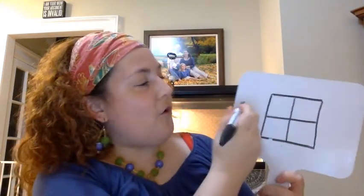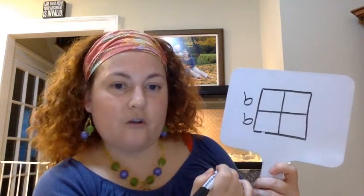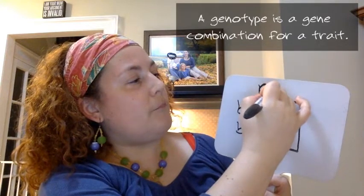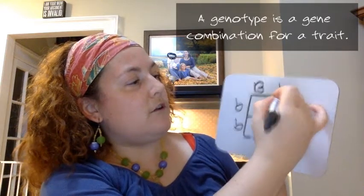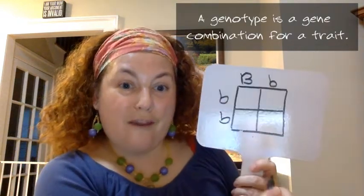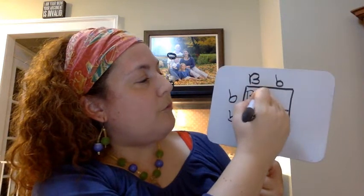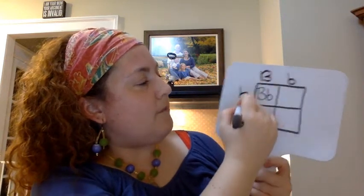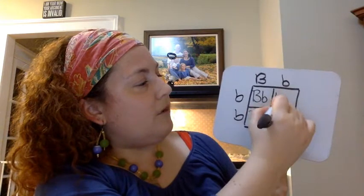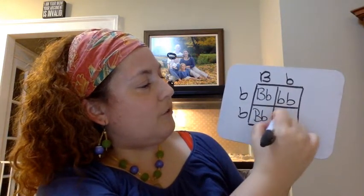I am little b, little b — that is my genotype. And Mr. Nichols is big B, brown, little b, recessive blue. I can cross them, giving the four combinations: big B little b, big B little b, little b little b, and little b little b.